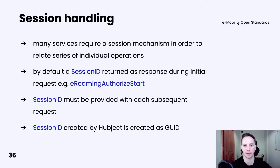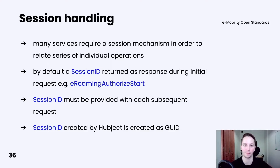Some services, especially the authorization service, require a session mechanism in order to correlate a series of individual operations. The typical scenario is, for example, charging start and stop, as well as pushing CDR correlated with an already finished charging session. If that happens, then session ID must be returned in a response for every initial request, for example the roaming authorized start. Session ID must be provided in each subsequent request. It's good to know that the session ID created by Hubject is in GUID format.